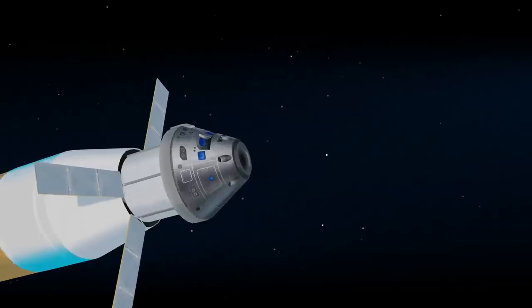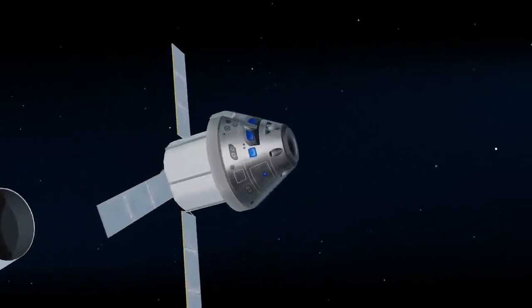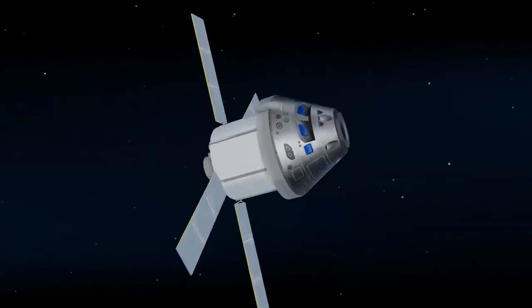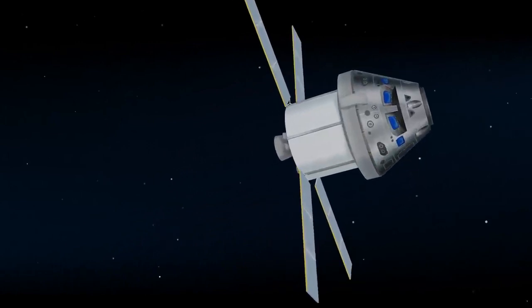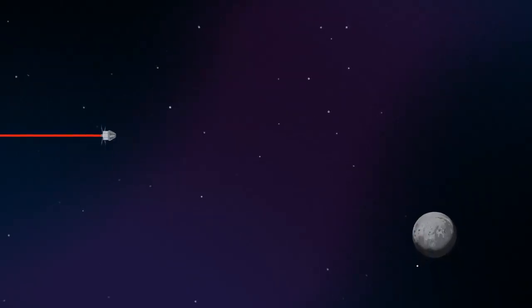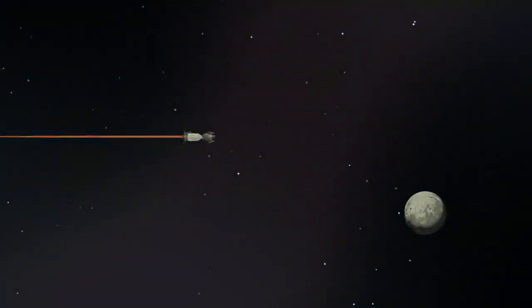Once this burn is complete, the upper stage of the SLS is jettisoned, and the crew aboard Orion coast for several days toward all that awaits them at the Moon. Approaching the Moon, we see the fundamental differences between Artemis and Apollo.